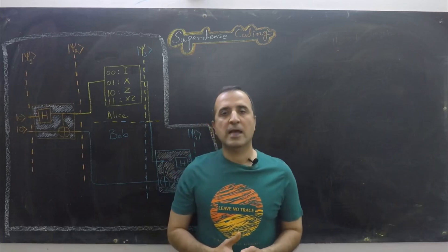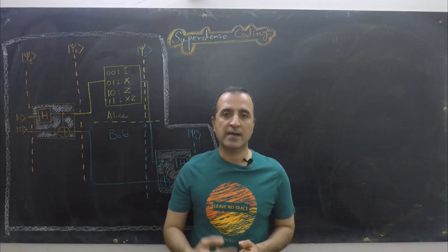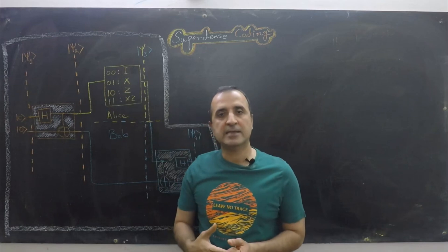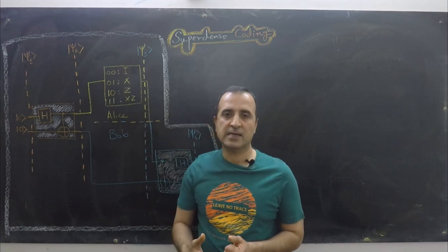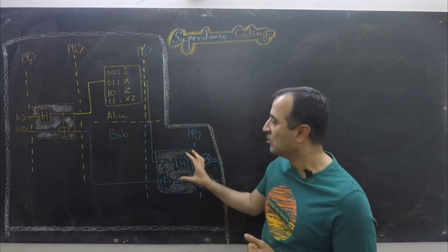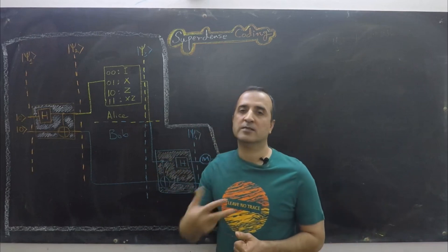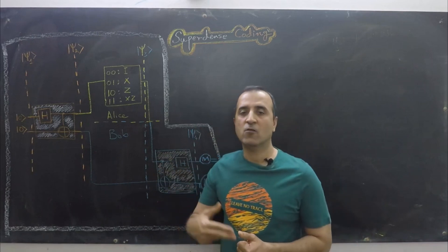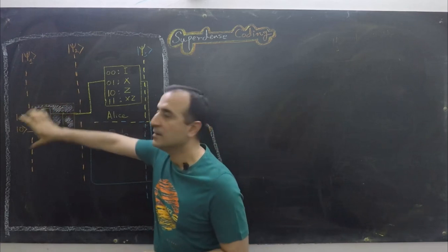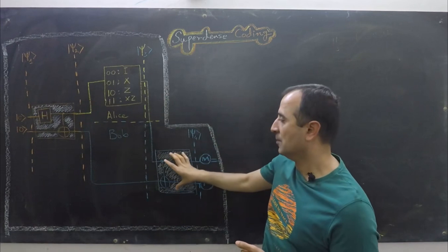In the future, Alice wishes to send two classical bits to Bob. To that end, Alice will perform different operations on her portion of the Bell state and then send the result to Bob. Bob will then do some operations on his side and retrieve the two classical bits that Alice wanted to send. We call these stages: preparing the Bell state, Alice encoding, and Bob decoding.